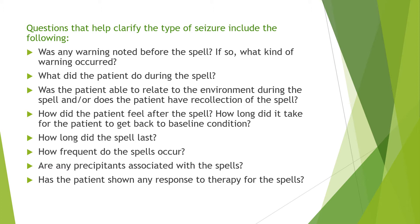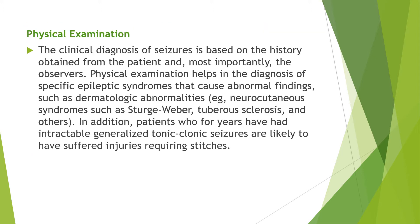How frequent do the spells occur? Are any precipitants associated with the spells? Has the patient shown any response to therapy for the spell? Is there any history of urinary or fecal incontinence? Is there any history of tongue bite? These are the questions necessary in history taking.